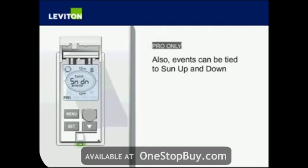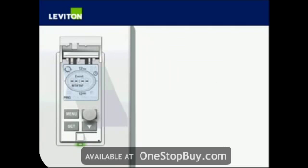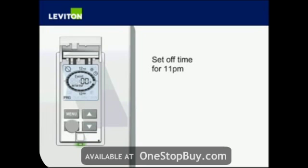Next, select the time the event will turn lights on. Use the up and down arrow buttons to select between the three options: clock time, sunup, and sundown. Press Set to select sundown.